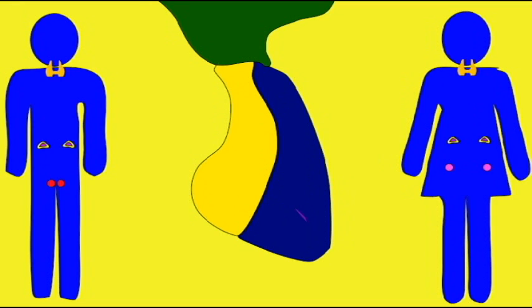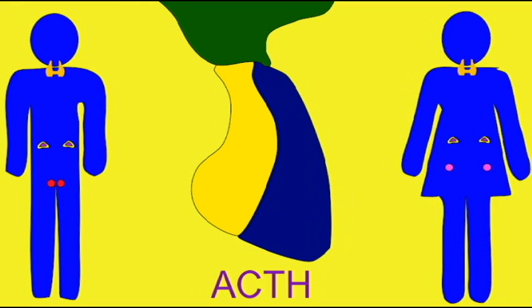The anterior pituitary synthesizes the hormone ACTH, adrenocorticotropic hormone — the tropic hormone which controls the hormones of the adrenal cortex. This hormone regulates the secretion of hormones from the cortex of the adrenal gland, which is located over the kidneys.